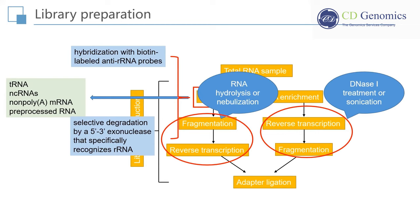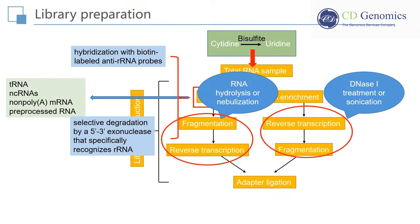In the classic NGS protocols, adapters are ligated onto sheared double-stranded DNA fragments. However, a major drawback of this approach is the loss of information on transcriptional direction. The pretreatment of RNA samples with sodium bisulfite can convert cytidine into uridine, and widespread C-to-T transitions thereby mark the coding strand of each transcript. Some other methods that maintain strand specificity have been proposed, such as direct ligation of RNA adapters to the RNA sample before reverse transcription.